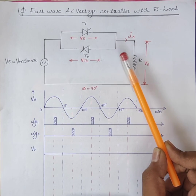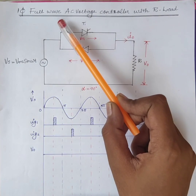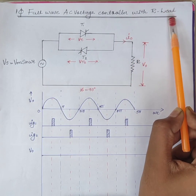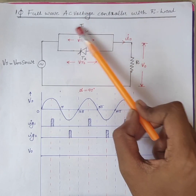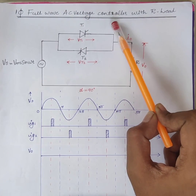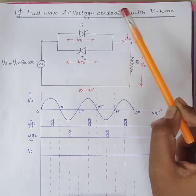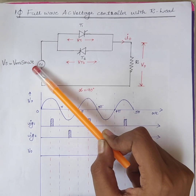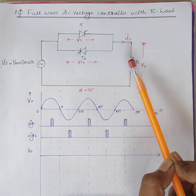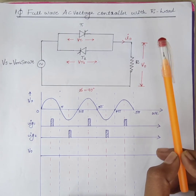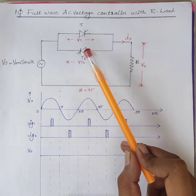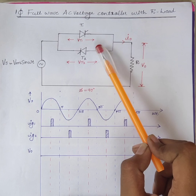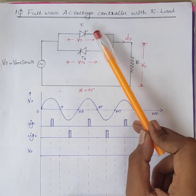Hello students. Today we will discuss single phase full wave AC voltage controller with resistive load. An AC voltage controller is a type of converter used to convert a fixed voltage, fixed frequency AC input supply to a variable AC voltage. This can be achieved by adjusting the firing angles of thyristors.